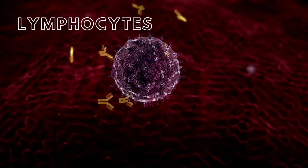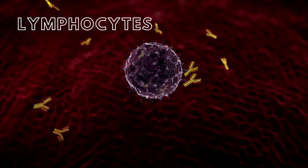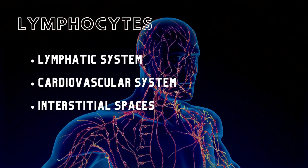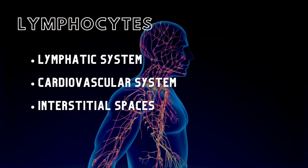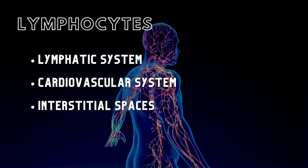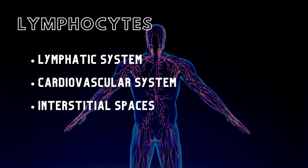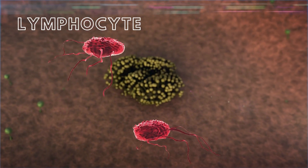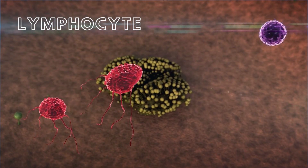Lymphocytes are the primary cells of the immune system and are found within the lymphatic and cardiovascular systems, as well as within the interstitial spaces of the body. When a lymphocyte encounters a pathogen, it will initiate an immune response.